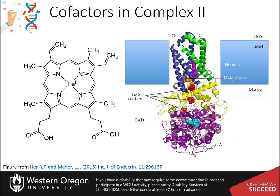This diagram shows the positions of the major cofactors in complex 2. The FAD, shown in blue, is reduced during the oxidation of succinate within the Krebs cycle. FADH2 subsequently passes the electrons through three iron-sulfur complexes, shown in red, to reach coenzyme Q, or ubiquinone, shown in orange. Heme B, shown here in purple and on the left-hand diagram, prevents reactive oxygen species formation and does not participate in electron transfer.